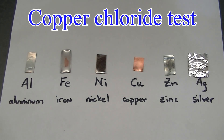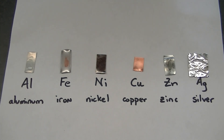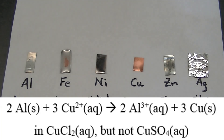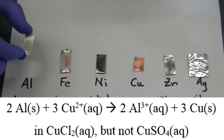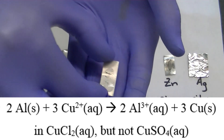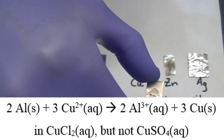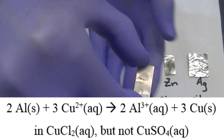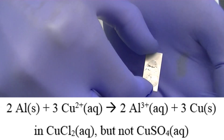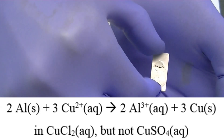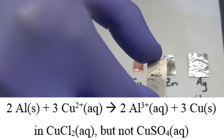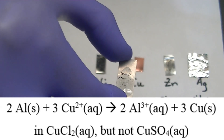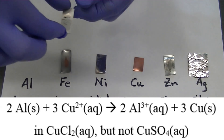Aluminum does react with a solution of copper chloride. Chloride ions enable the dissolved copper to penetrate the layer of aluminum oxide that exists on the surface of aluminum metal. This penetration of copper ions allows the aluminum to react with the dissolved copper to form dissolved aluminum and copper metal. If you look closely, you can see some flecks of copper metal forming on the surface of the aluminum metal.